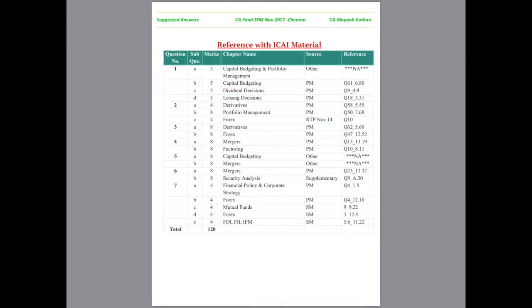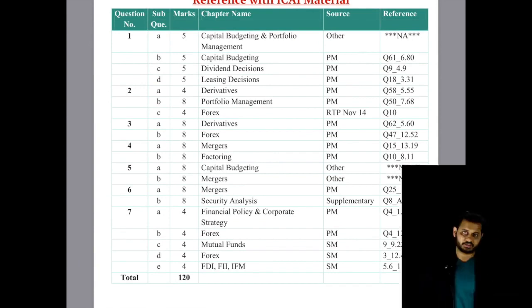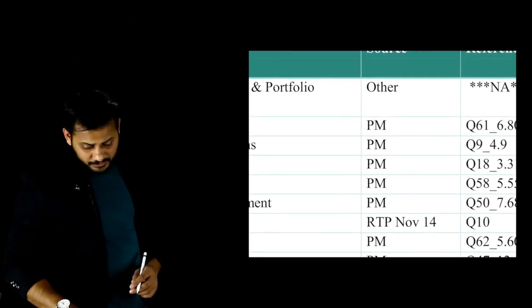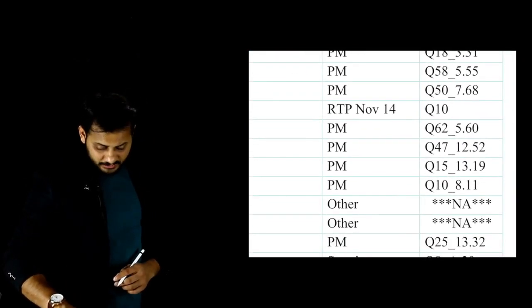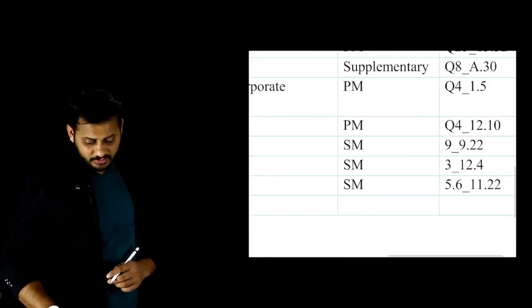So in this PDF itself on the second page, you will find the same thing. You can see that in the first column, I have written the question number. In the second column, sub-question number is there. Marks, chapter name, source and reference. You can see here PM means the practice manual, RTP November 14 and in the end you will find study material.